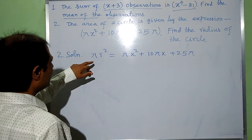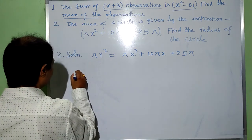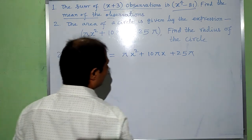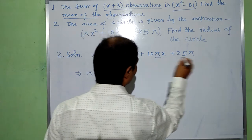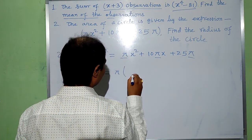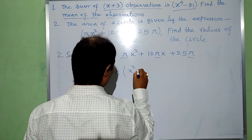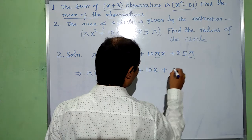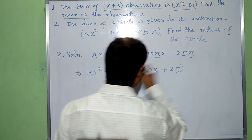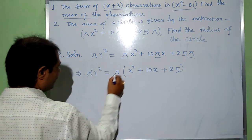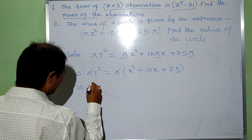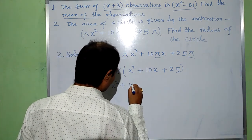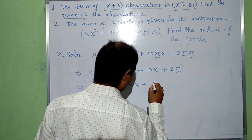As we know, the area of the circle is pi r squared. So pi r squared equals pi x squared plus 10 pi x plus 25 pi. Taking pi as common, pi into x squared plus 10x plus 25. Pi and pi will be cancelled, and then we have r squared equal to x squared plus 10x plus 25.